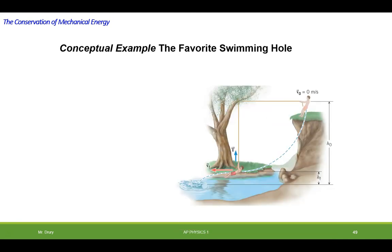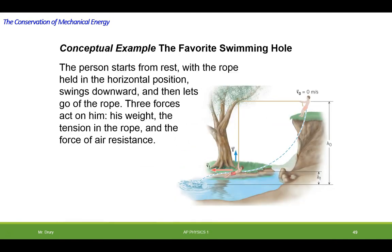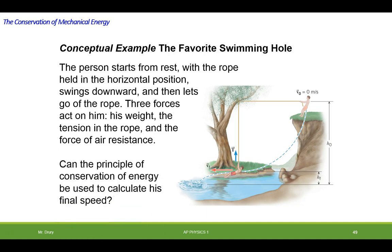Okay, we have a person starts from rest with the rope held in the horizontal position, swings downward, and then lets go of the rope. Three forces act on him: his weight, the tension in the rope, and the force of air resistance. Can the principle of conservation of energy be used to calculate his final speed? What do you think?